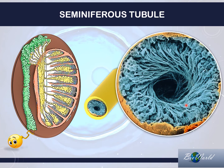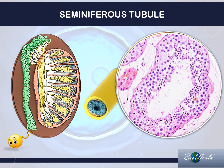The cross section of a seminiferous tubule, when seen under a microscope, will appear like this, where you have the outer layer of the seminiferous tubule. Here you have the layers of cells that carry out spermatogenesis, and in the center hollow space you will have the sperms that have been produced by spermatogenesis.